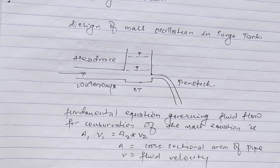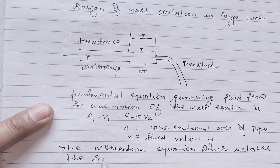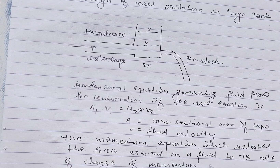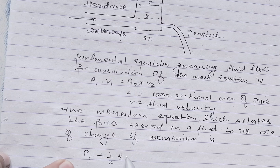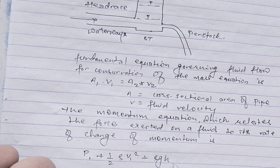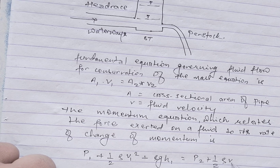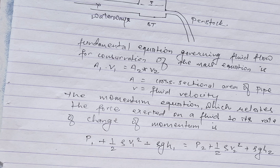The momentum equation, which relates the force exerted on a fluid to its rate of change of momentum, involves the variables: p for pressure, rho (ρ) for fluid density, v for fluid velocity, g for acceleration due to gravity, and h for the height of the fluid column.